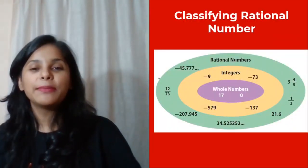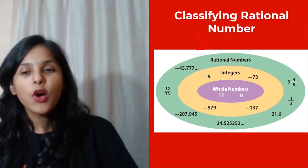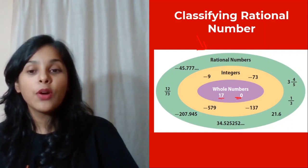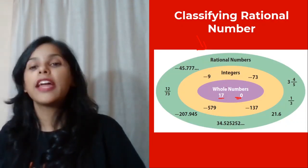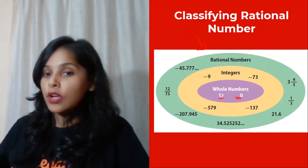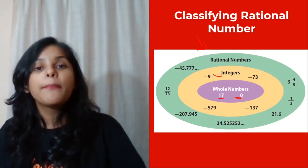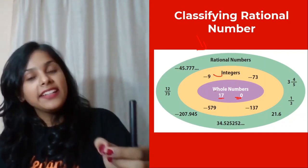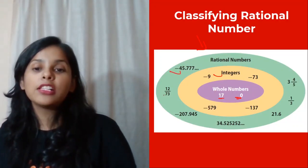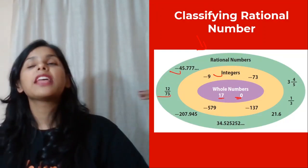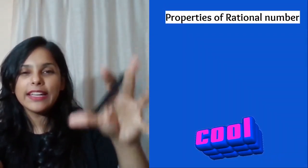We have classified rational numbers for you. See the smallest circle, which is whole numbers — it includes zero and all natural numbers. The bigger circle is integers, which includes whole numbers but also negative numbers. The largest circle is rational numbers, which includes integers, whole numbers, natural numbers, decimals, fractions, negative decimals — every number in short.